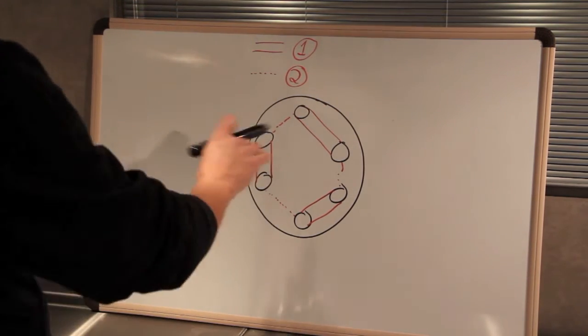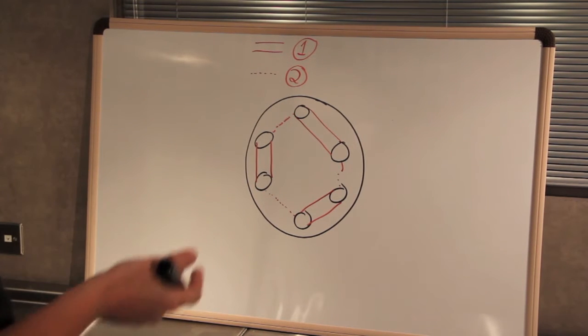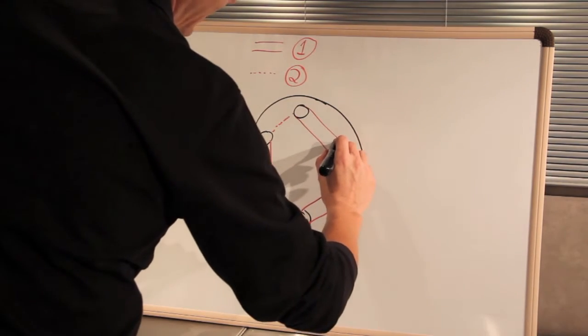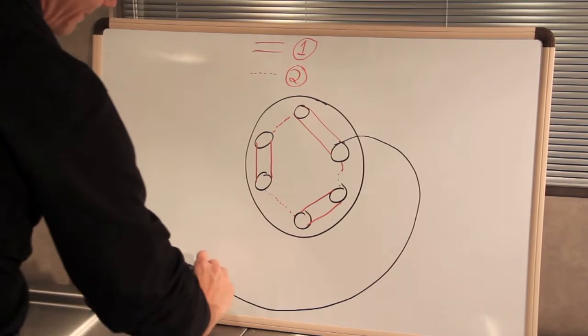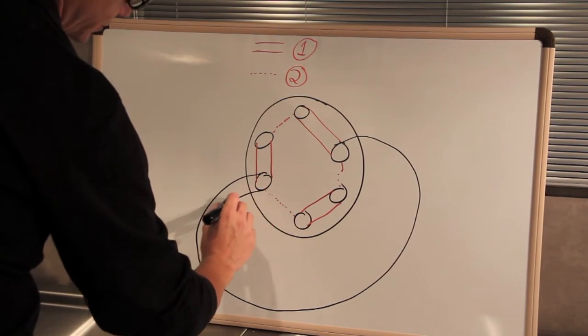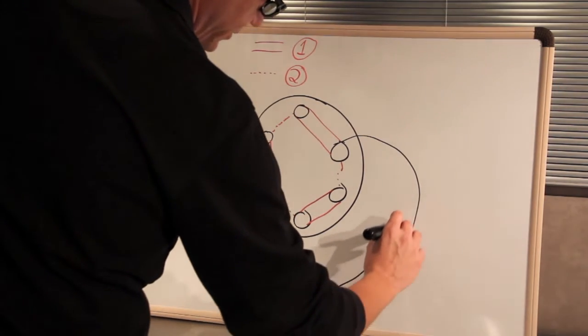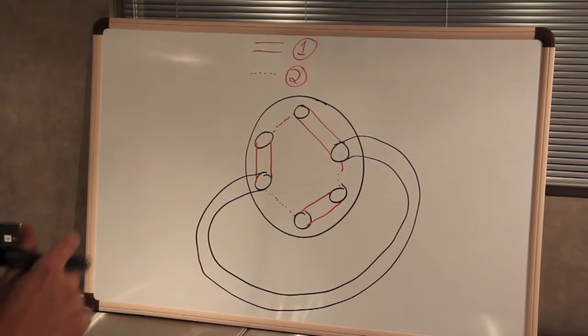Right now we're going to say position one is actually our sample loading position. So we're going to draw in the sample loop and the sample loop simply goes from a port on one side of the valve to a port directly opposite. Now it really doesn't matter which ports you use for this. It's important to understand how it works.